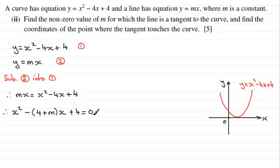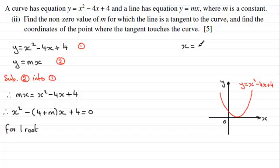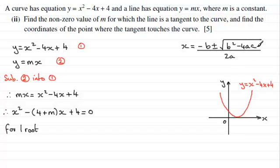Comparing this to ax squared plus bx plus c equals zero, a equals 1, b equals minus(4 plus m), and c equals 4. For a tangent to the curve — a line that only touches it at one point — there is just one root. We should recall that in the quadratic formula x equals minus b plus or minus the square root of b squared minus 4ac, all over 2a, the discriminant b squared minus 4ac must equal zero for one root.